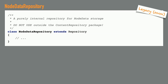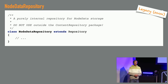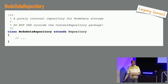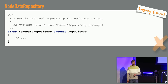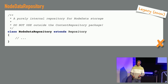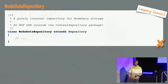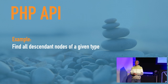As a last resort, you could use the node data repository and then convert the results back to nodes. But that's explicitly not part of the public API — it even says 'do not use it outside of the content repository package.' Spoiler alert: it is used outside of the content repository package, but it should not. All right, let's see how that same example looks in Neos 9.